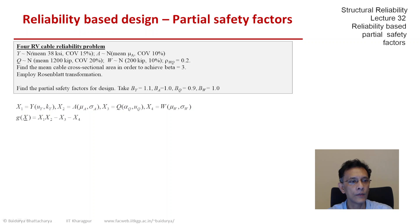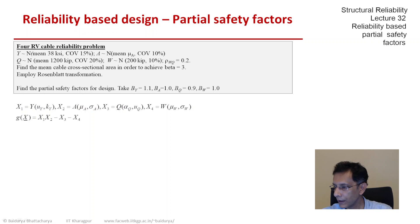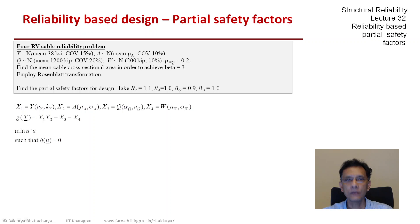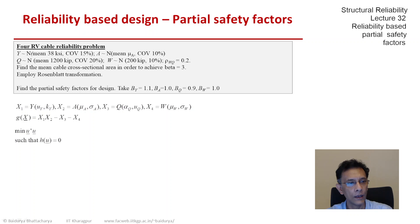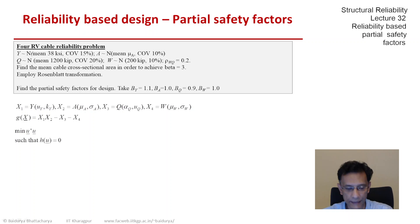The four random variables are x1, x2, x3, and x4, and they have been defined on your screen. The limit state equation is x1·x2 minus x3 minus x4 equals 0. We map it to the standard normal space — the independent standard normal space — and obtain the minimum distance to the transformed limit state, which we have done many times.